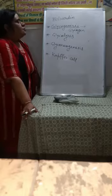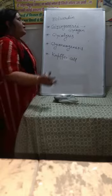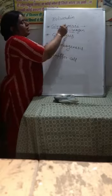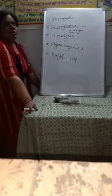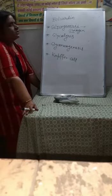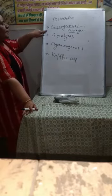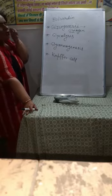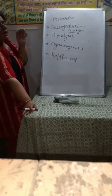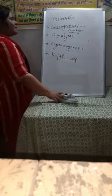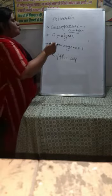Now, talking about the pancreas — for the formation of glycogen, insulin is very essential. Insulin stimulates the liver to store excess glucose in the form of glycogen. If there is no insulin, then excess glucose remains in the blood, and the person may suffer from the disease called diabetes, or sugar.